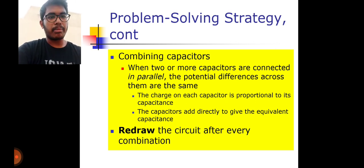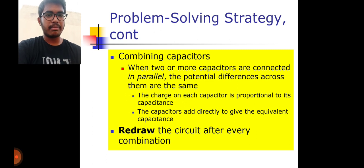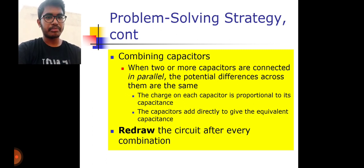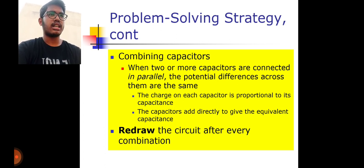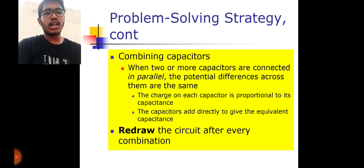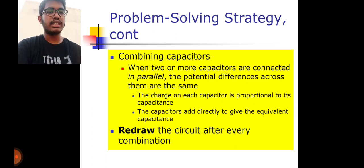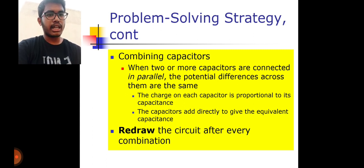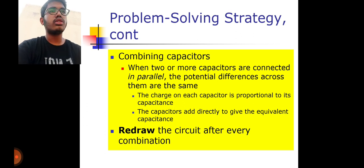When two or more capacitors are connected in parallel, the potential difference across them is the same. The charge on each capacitor is proportional to its capacitance — charge is directly proportional to capacitance. The capacitors add directly to give the equivalent capacitance.